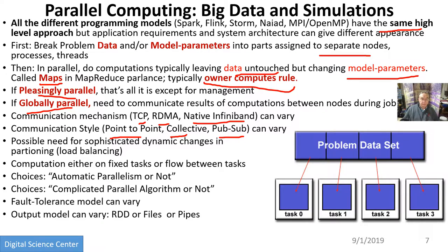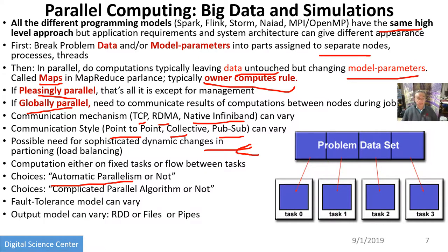Load balancing issues arise for problems like galaxy simulation, where sometimes the best way to chop up the problem varies with time and data. The particles are moving around, so the best decompositions change with time. You can have a fixed task with data fixed, or data flowing between tasks. You can have automatic parallelism like Hadoop, or very customized parallelism where the user designs a sophisticated algorithm. Algorithms can be increasingly parallel - simple or complicatedly parallel. We also have to worry about fault tolerance and how data is output.